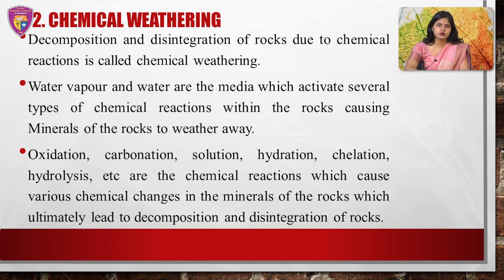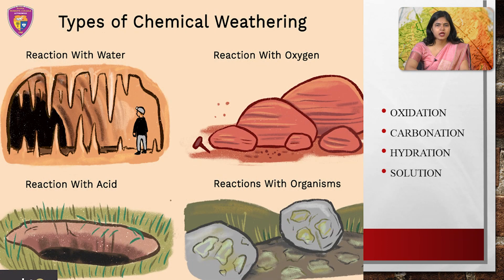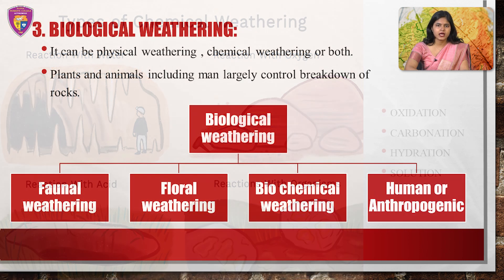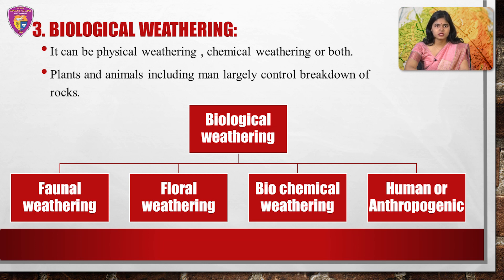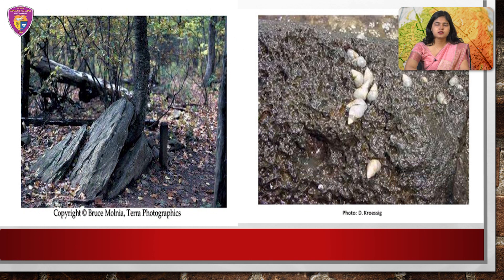The next is chemical weathering. It is decomposition and disintegration of rock due to chemical reactions through oxidation, carbonation, solution, hydration, chelation, hydrolysis, etc. The chemical reactions cause various chemical changes in the minerals of the rock, which ultimately lead to decomposition and disintegration of rocks. Biological weathering can involve both physical and chemical weathering, where plants and animals including man and microorganisms largely control the breakdown of rocks. This picture shows root penetration and biochemical weathering.